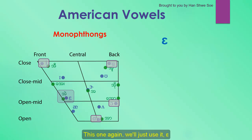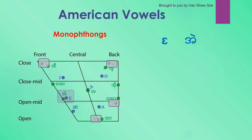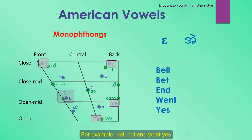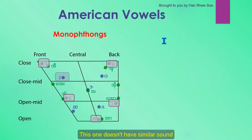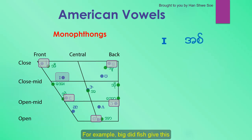The next one, we'll just use A. For example: bell, bat, end, wind, yes. The next one doesn't have a similar sound in Burmese, but we can shorten E and we'll get the sound I. For example: big, did, fish, give, this.